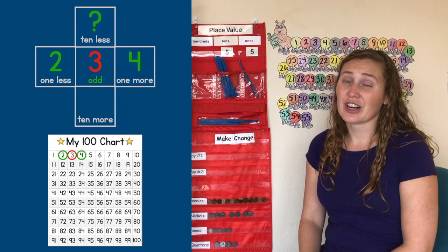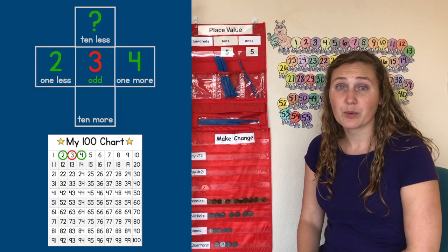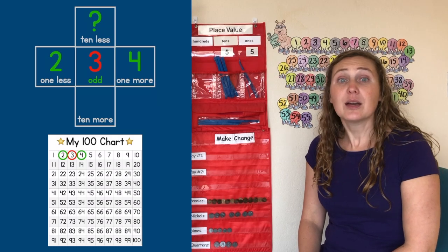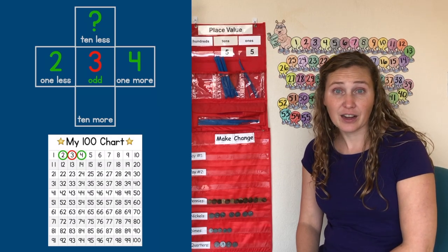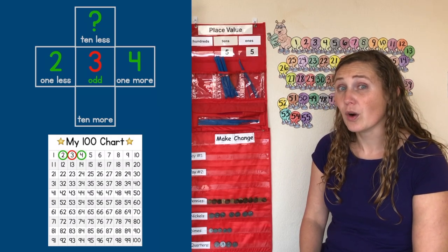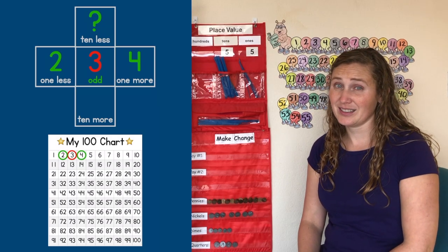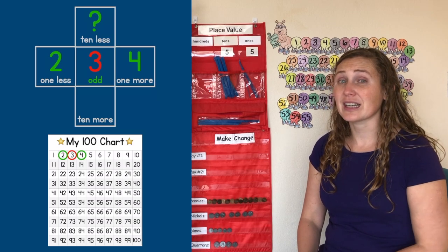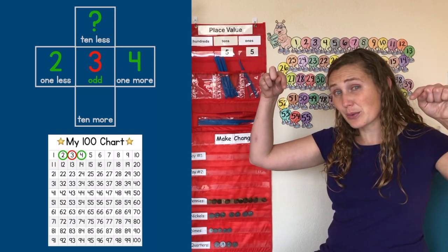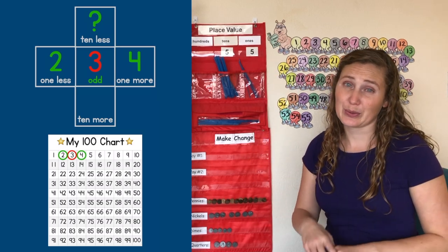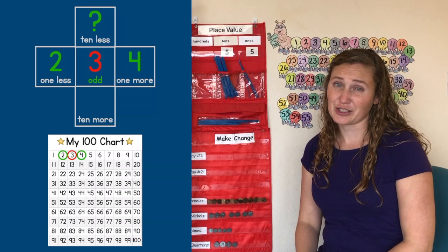Our hundreds chart doesn't show us what ten less than three is, but we can find what's ten more than three. Ten more than three is the number right below three on the hundreds chart.